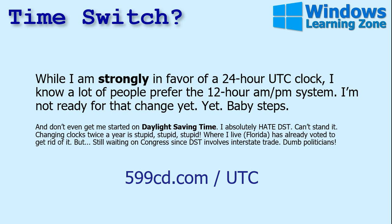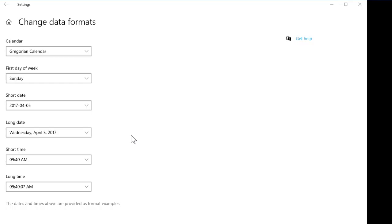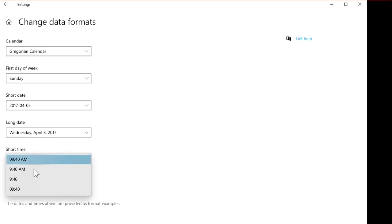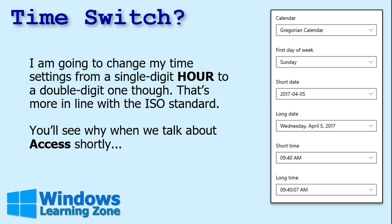But if you want to learn more about either of these concepts — universal time or daylight savings time — there's the link right there. Now, I'm going to leave time pretty much as it is, but I am going to switch from the single-digit hour to the double-digit hour. That's more in line with the ISO standard. So I'm going to change my short time and long time settings — I like that double-digit hour.